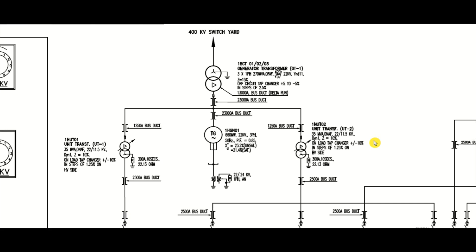Today we have a small topic related to power system networks. Here is a 660 megawatt large steam turbine generator, a generator step-up transformer, and unit auxiliary transformers. The question is: why is the high voltage side of the unit auxiliary transformer connected by bus duct to the generator bus duct, and why not by cable connection? That is today's topic. The generator is rated 660 MW, 22 kV.